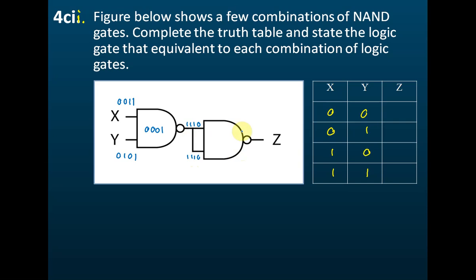For the AND gate: 1 AND 1 gives 1; 1 AND 1 gives 1; 1 AND 1 gives 1; 0 AND 0 gives 0. And after the NOT gate, the output becomes 0, 0, 0, 1. So you see, the 1s become 0 and the 0 becomes 1 — this acts exactly like a NOT gate. So the output is 0, 0, 0, 1.